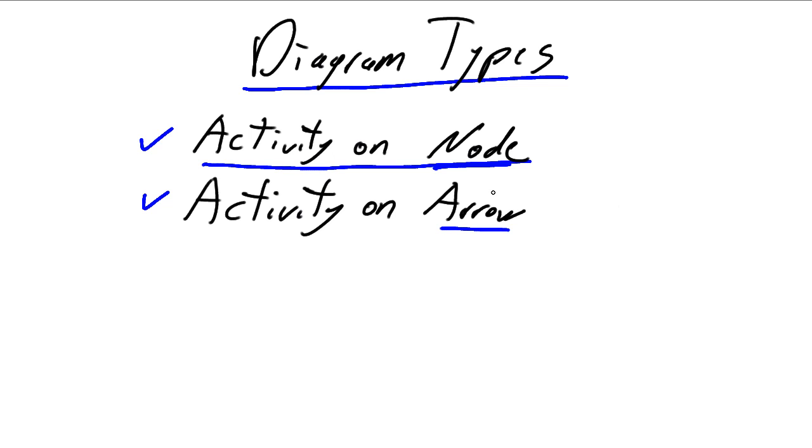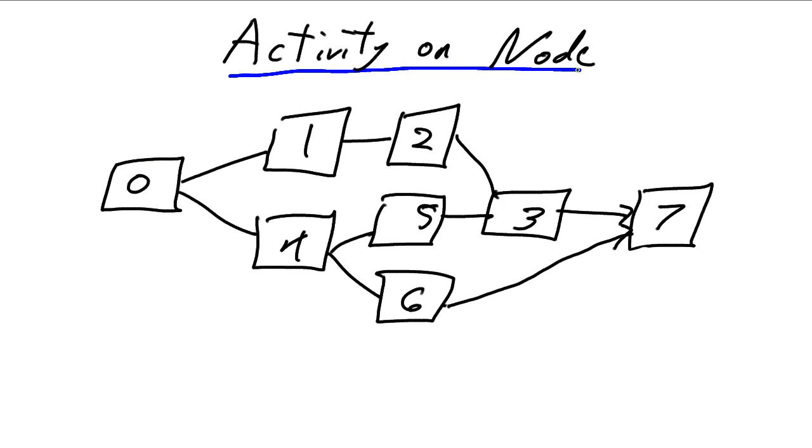And here is our activity on node. Again, the only distinction between this and activity on arrow. Here, the tasks are identified on the node, on the square box. With the activity on arrow, the activity would be identified here on the line or on the arrow. Very simple project diagram. We have seven tasks in total. Here's our starting task.